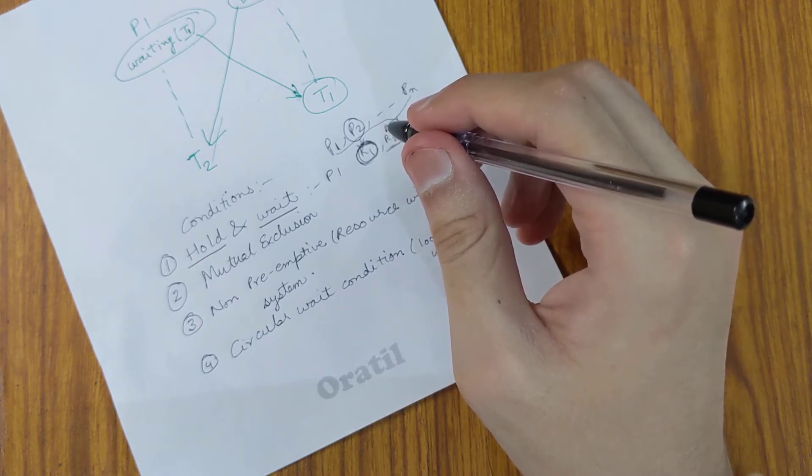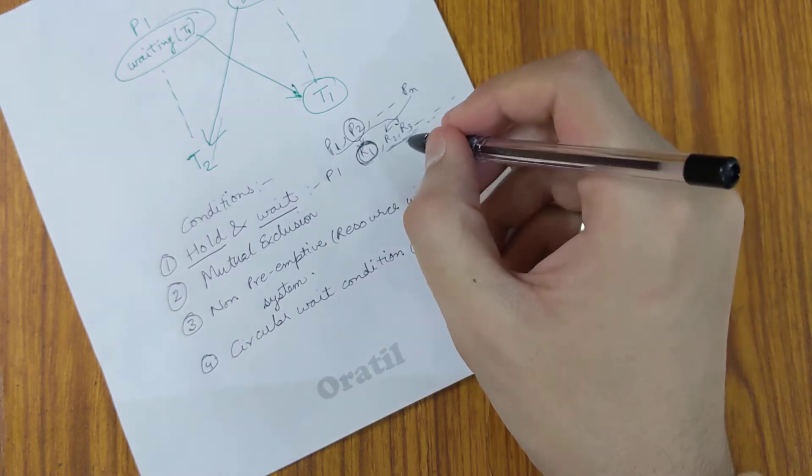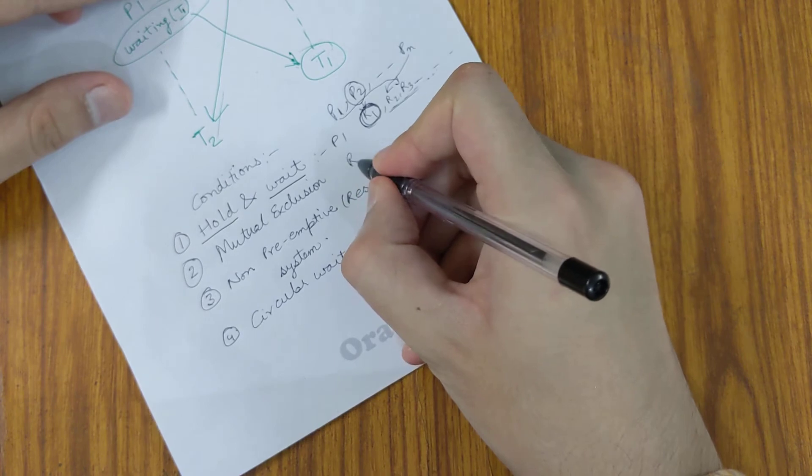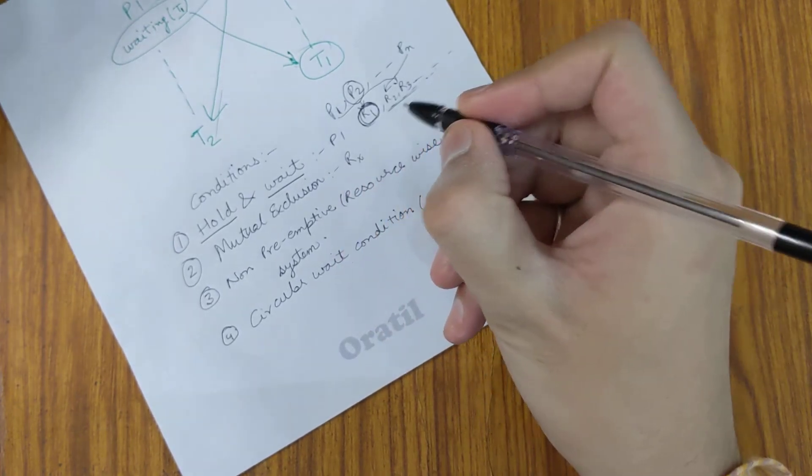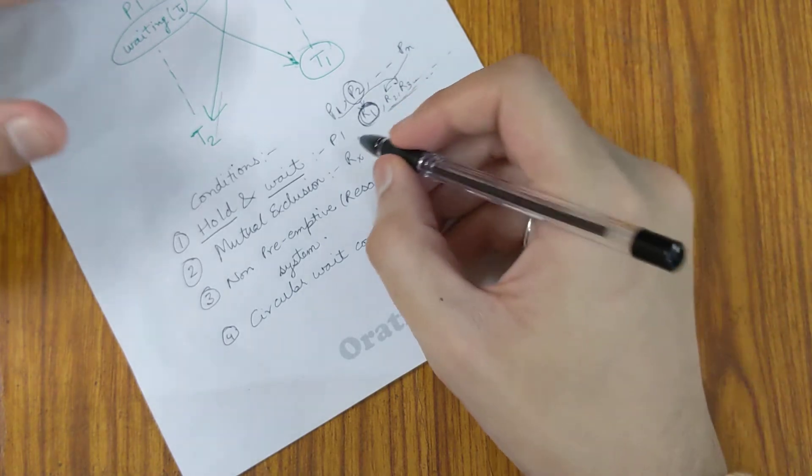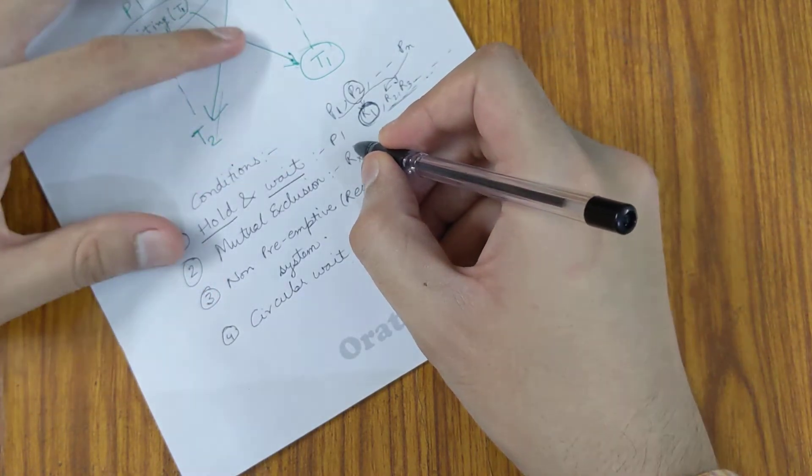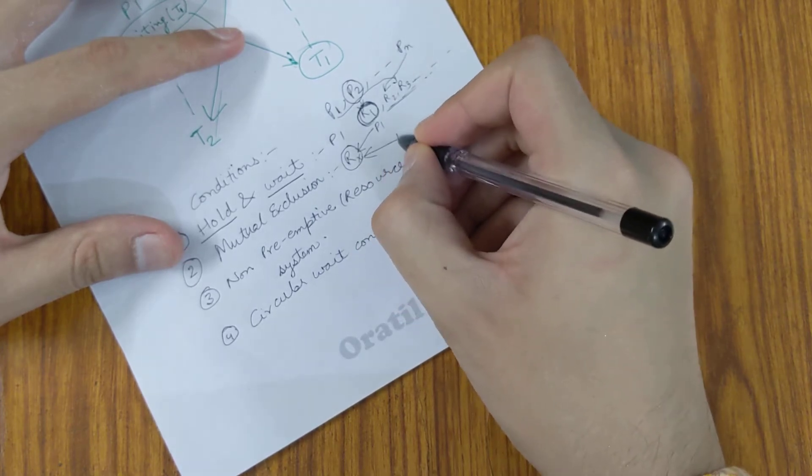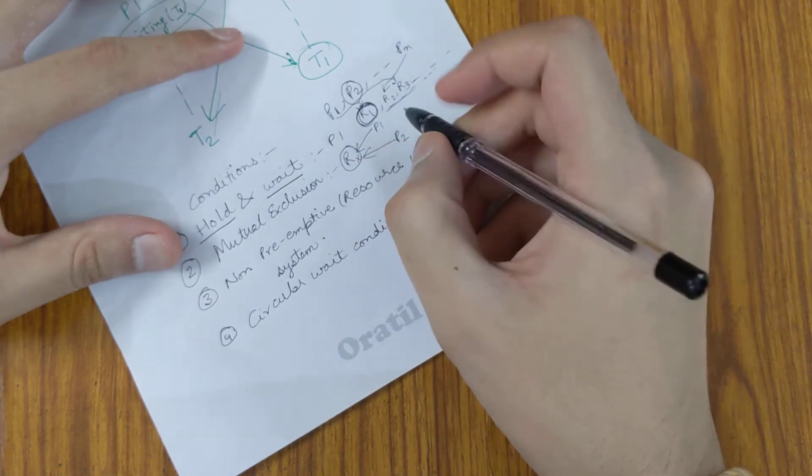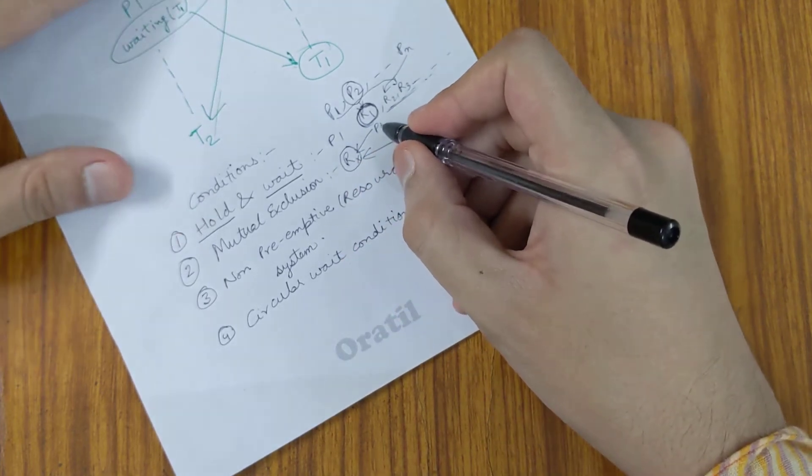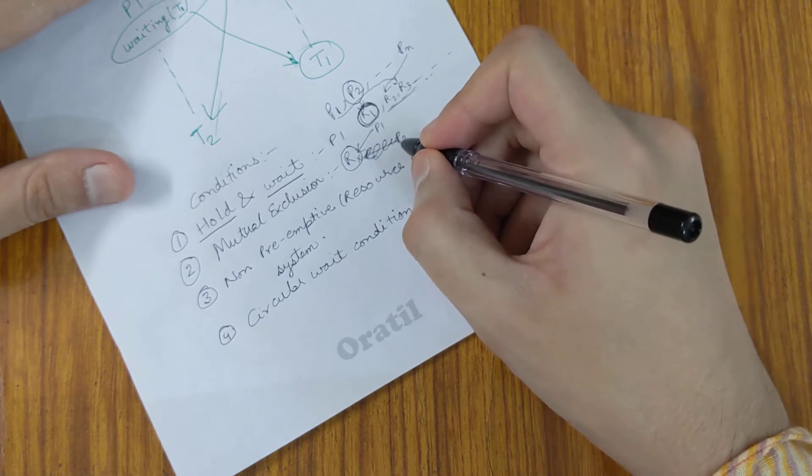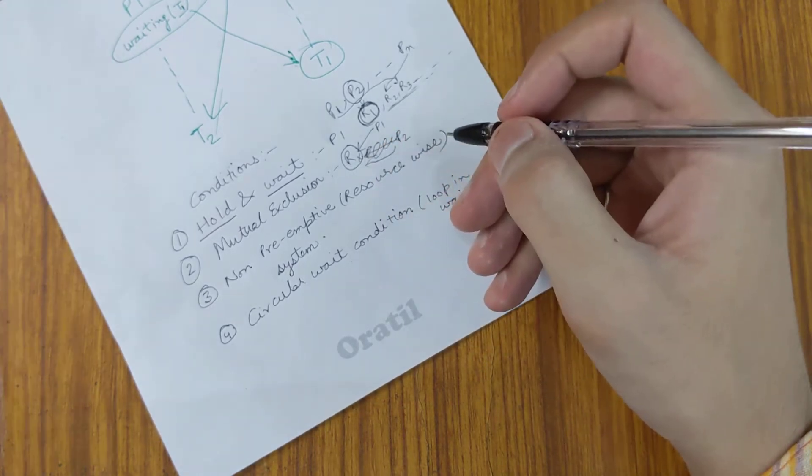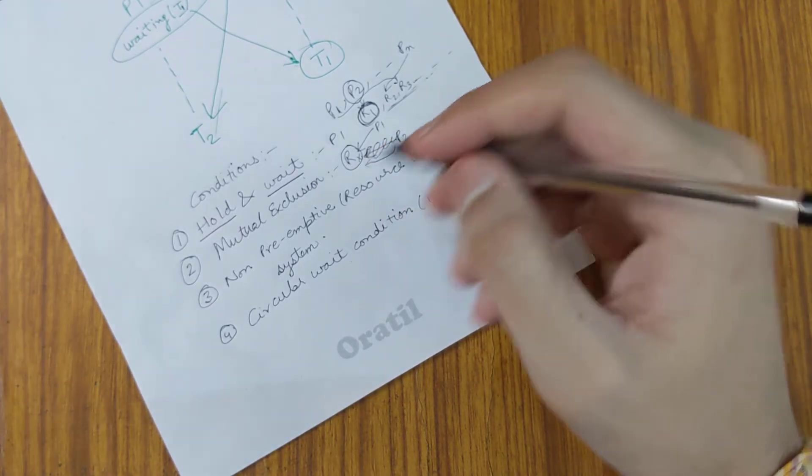The second condition is mutual exclusion. This implies that there must be a resource, let's say RX, which has to be held in a non-shareable mode - it cannot be shared by two processes together. So if P1 is holding RX, then P2 must wait for P1 to release RX before it can acquire it.